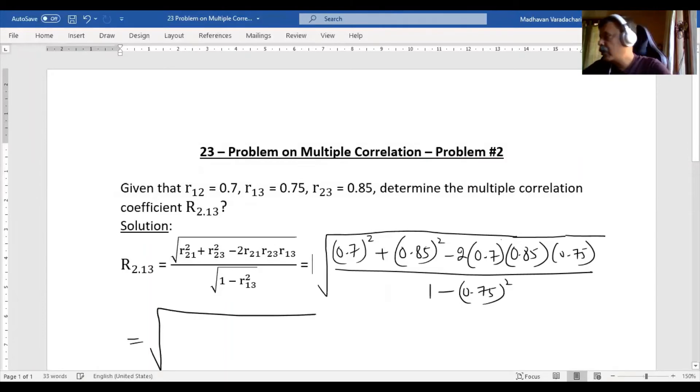...calculating now all these values, we have the first one will be 0.49, then 0.85 squared will be...